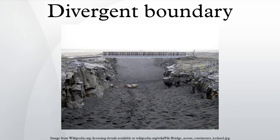At divergent boundaries, two plates move apart from each other and the space that this creates is filled with new crustal material sourced from molten magma that forms below. The origin of new divergent boundaries at triple junctions is sometimes thought to be associated with a phenomenon known as hotspots.